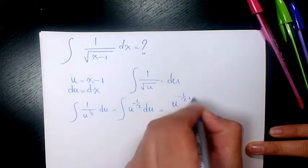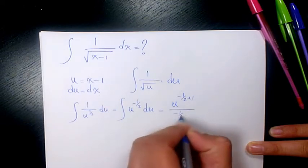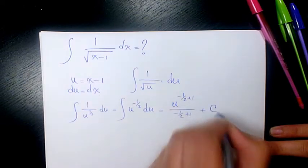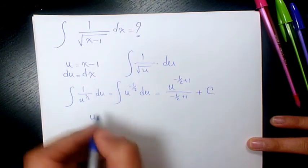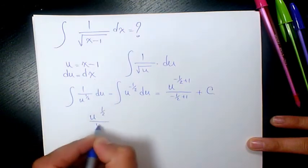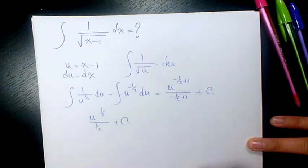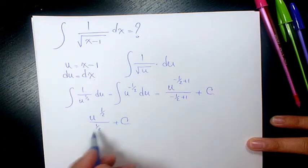So that will be u to the power of 1/2 divided by 1/2, plus a constant number. In the denominator we have 1/2. When you bring it to the top, it's going to be 2 square root of u plus a constant number.